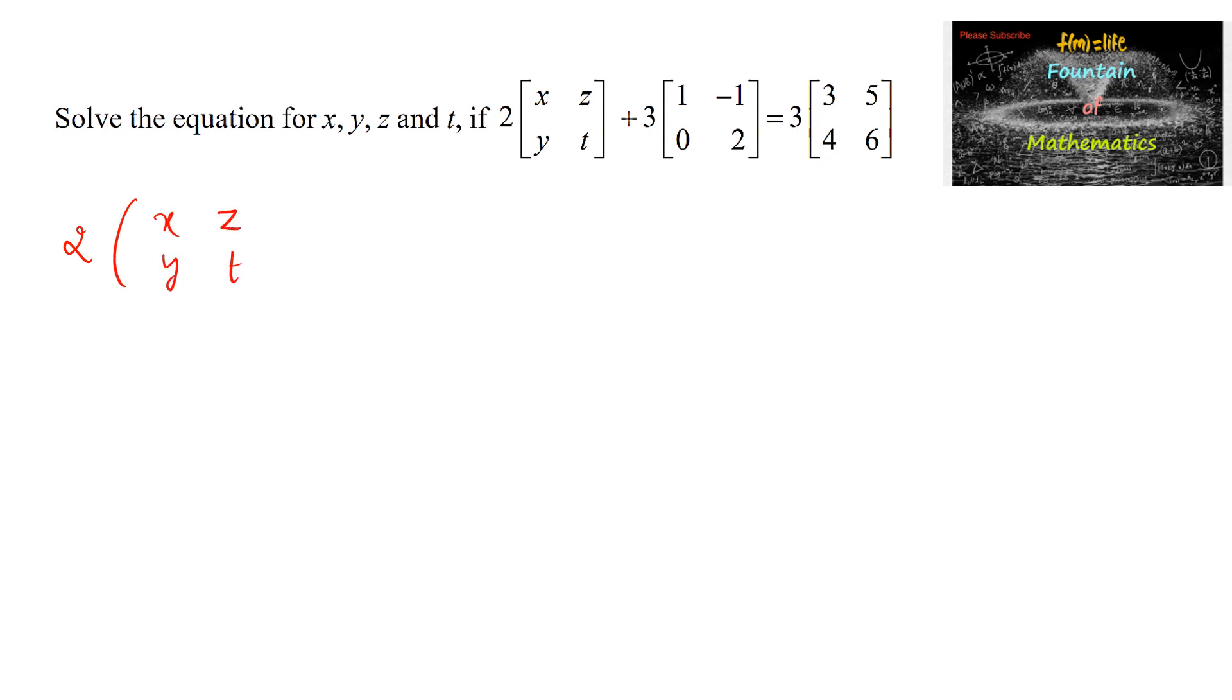t plus 3 times 1, minus 1, 0 and 2 is equal to 3 times 3, 5, 4 and 6.